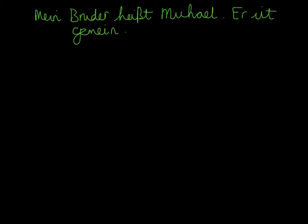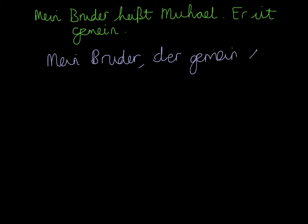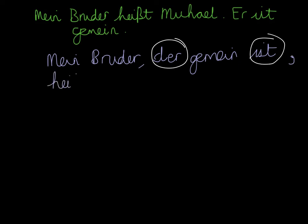Relative clauses can be used to reduce the amount of sentences you actually write. For example: Mein Bruder heißt Michael. Er ist gemein. Here you can use a relative clause instead of two separate sentences. It could work as: Mein Bruder, der gemein ist, heißt Michael. So there's my relative clause with my relative pronoun der and my verb at the end, and then the rest of the sentence follows. This is an example of where the relative clause has been placed in the middle of the sentence.